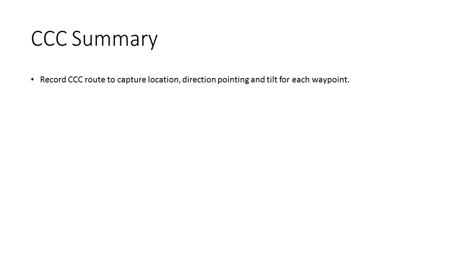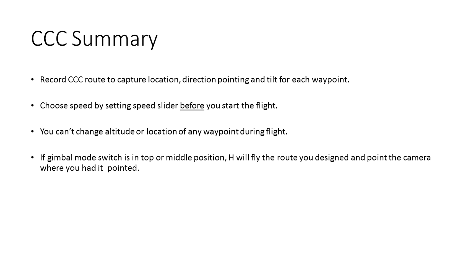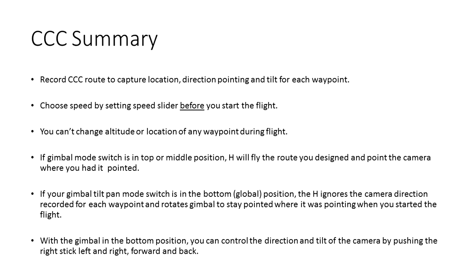To sum it up: recording a CCC route captures the location, direction you're pointing, and tilt of your gimbal for each waypoint. You can choose your speed by setting your speed slider before you start each flight — once the flight starts, you can't change speed. You can't change the altitude or location of any waypoint during the flight. If your gimbal mode switch is in the top or middle position, the H will fly the route you designed and point the camera where you had it pointed. If your gimbal switch is in the bottom position, it will ignore the camera direction recorded for each waypoint and rotate the gimbal to stay pointed at the spot where it was pointing when you first started your flight. You can also control camera direction and tilt by pushing the right stick left, right, up, or down.